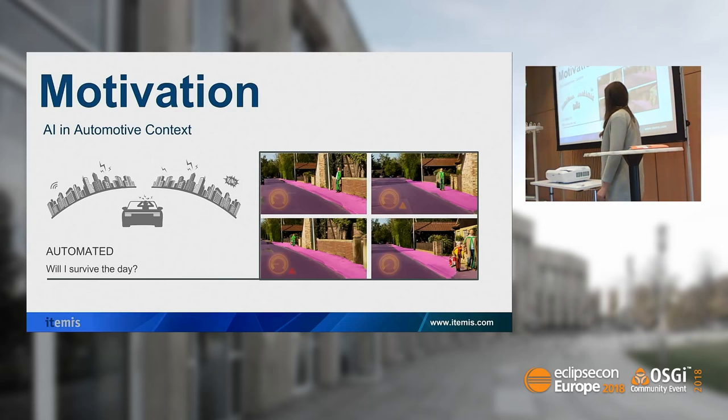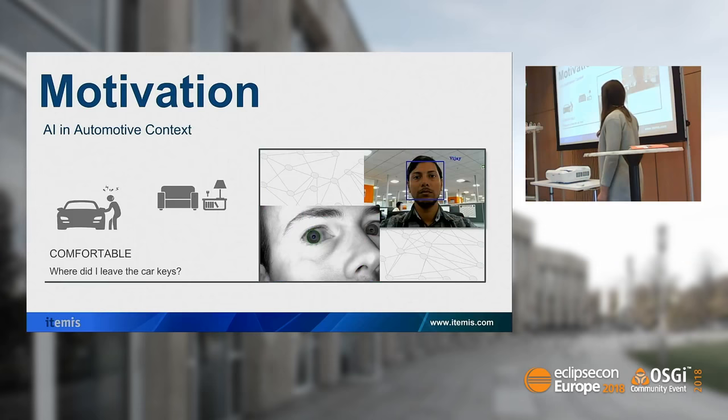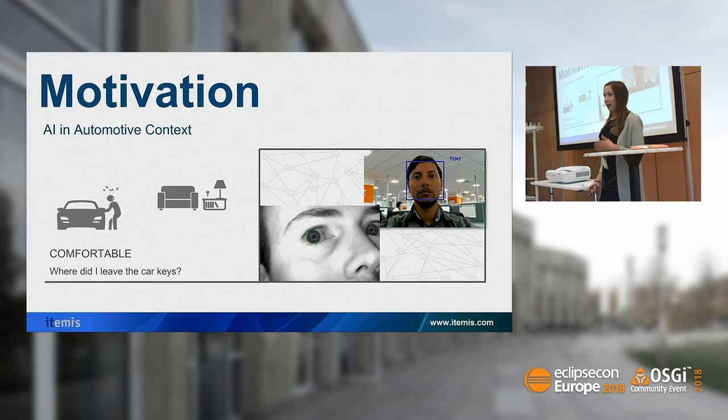It's not only automated driving — there are also other use cases. Thinking about comfort, most of you have probably experienced: where did I leave the car keys? With artificial intelligence you can cope with this problem, for example by enabling authentication via iris recognition or face recognition of the car owner. Also, the emotion could be detected when you enter the car, and based on your emotion, appropriate music is already played.